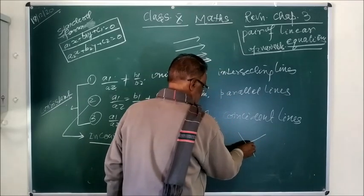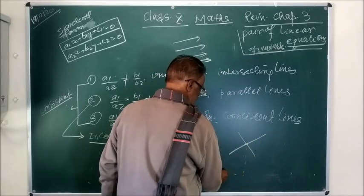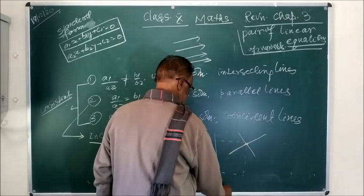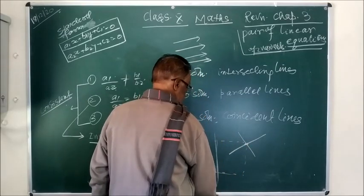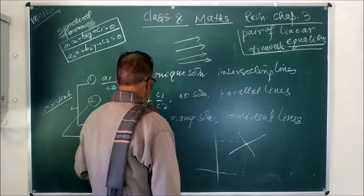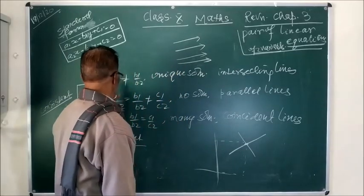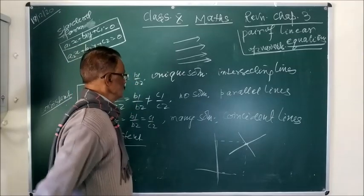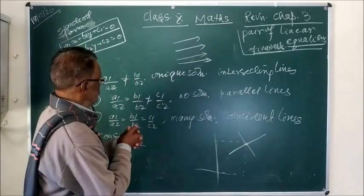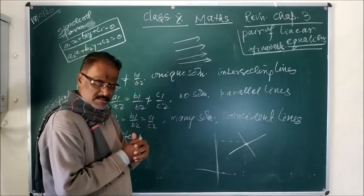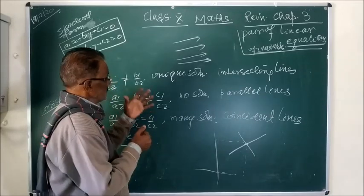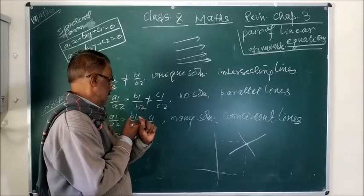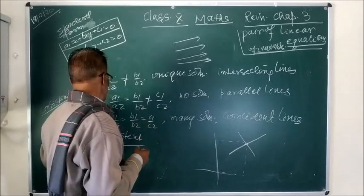Because the intersection point will be the solution of the given equations. So if this condition — A1/A2 not equal to B1/B2 — holds, then the algebraic interpretation is unique solution, and the graphical representation is intersecting lines.